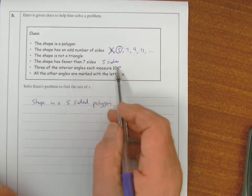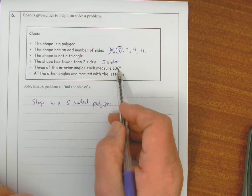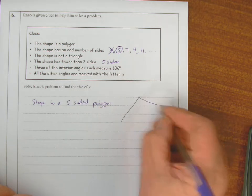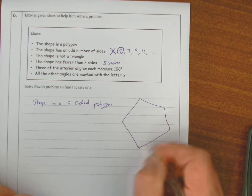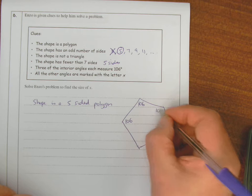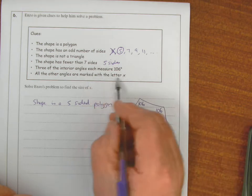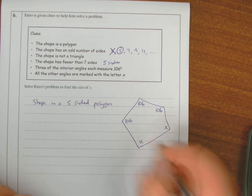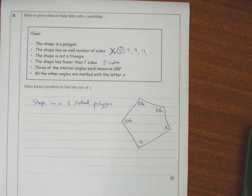Three of those interior angles are 106, and the other angles are marked with the letter x. So if I just quickly draw a five-sided polygon here, three of them are 106, and the other two are each x, so those two are equal to each other.